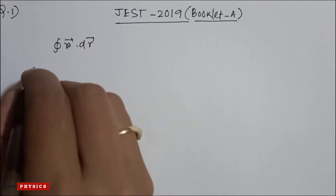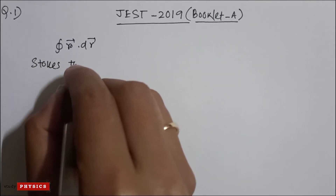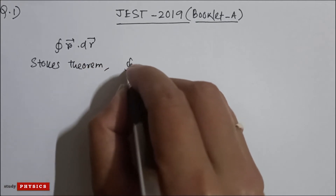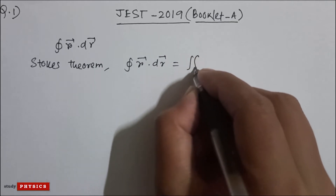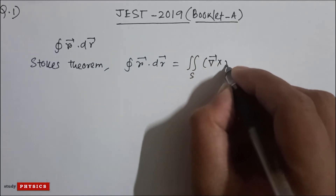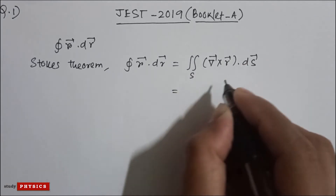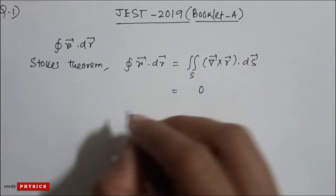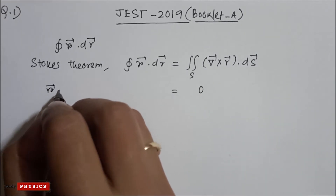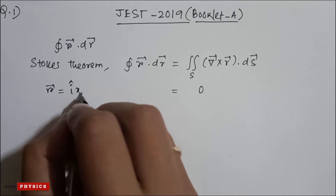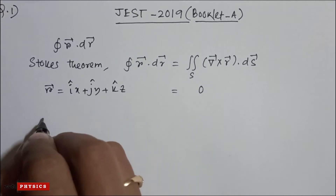We can use Stokes theorem here. From Stokes theorem, closed integration of R dot dR equals the surface integral of curl of R dot dS. We know that curl of R is zero. To verify: R equals i-cap x plus j-cap y plus k-cap z.